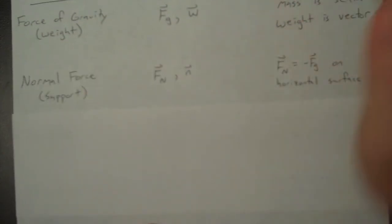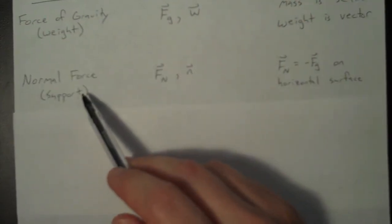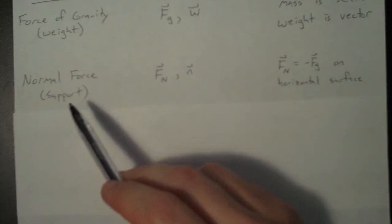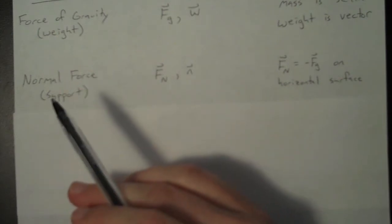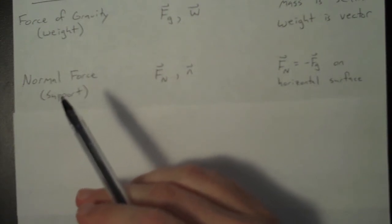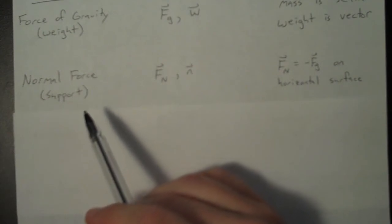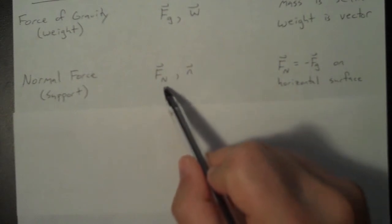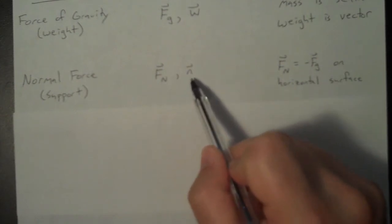Our next common force we'll see in this class is the normal force, also called the support force. This is just a force that a surface will exert to prevent you from falling through. So the ground that you are standing on or sitting on right now is providing a normal force. The two main abbreviations are the following: F subscript n. Also you'll sometimes just see the letter N.